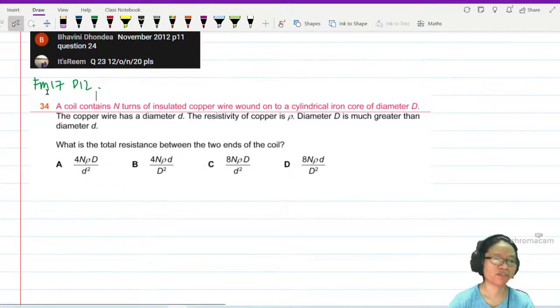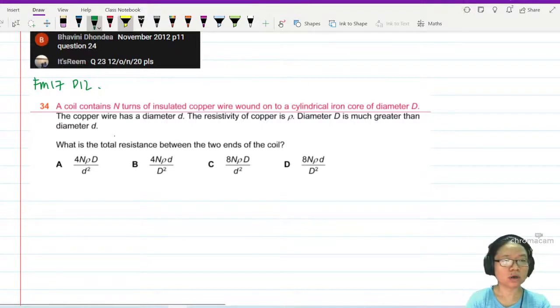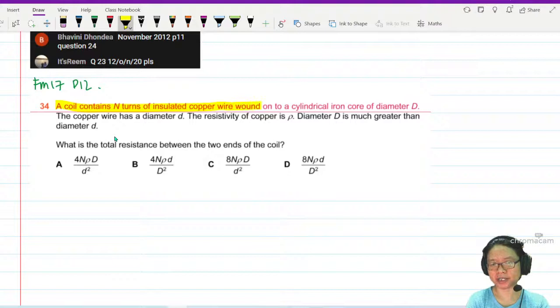So in this question from FEDmush 17 paper 1-2, we are going to look at a coil containing n turns of insulated copper wire wound on a cylindrical iron core of diameter d.